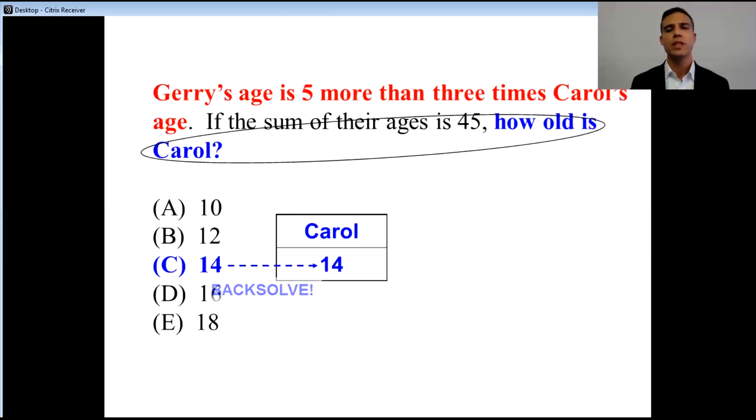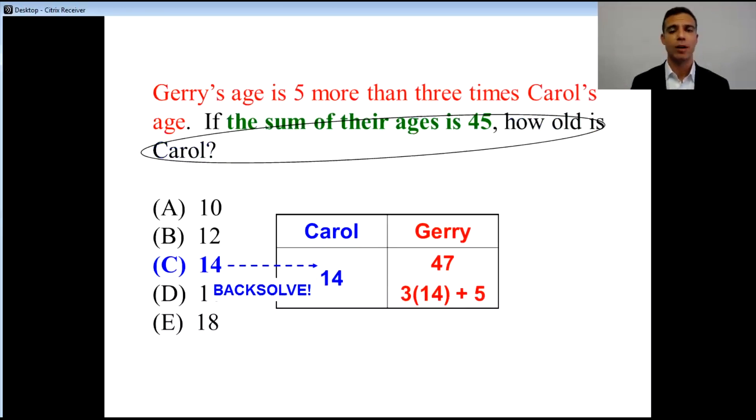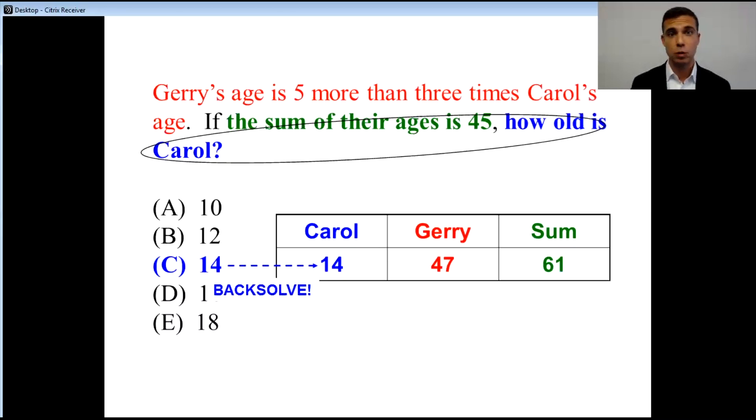If we decide that Carol is 14, let's go back to the beginning of the problem and see if this works out. Jerry is five more than three times Carol. Well, if Jerry is five more than three times Carol, three times 14 is three times Carol. Five more than that makes Jerry. So Jerry is 47. But it says the sum of their ages has to be 45. When I take a look at this and I see Carol and Jerry together, I come up with 61.